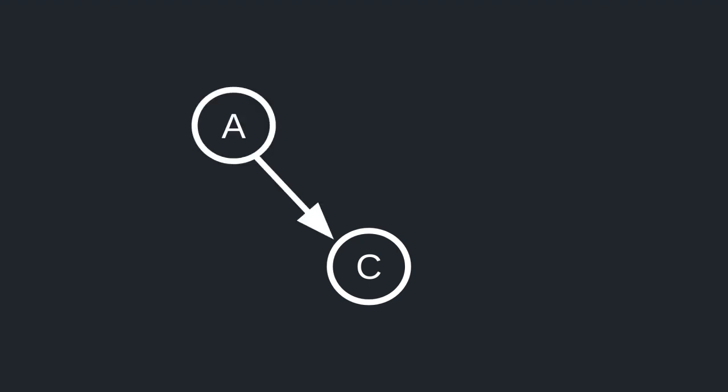In this video, we'll go through some examples of multiple inheritance in Solidity. For the first example, we'll consider the case where contract C inherits from contract A and contract B.